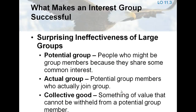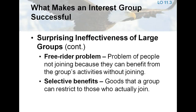Many factors affect the success of an interest group, including the size of the group, the intensity, and its financial resources. Small groups actually have organizational advantages over large groups. A potential group is composed of all people who might be group members because they share some common interest. An actual group is composed of those in the potential group who choose to join. A collective good is something of value, such as clean air or a higher minimum wage, that cannot be withheld from a potential group member. The free rider problem occurs when potential members decide not to join but to sit back and let others do the work, from which they will nonetheless benefit. According to Olson's Law of Large Groups, the bigger the group, the more serious the free rider problem.